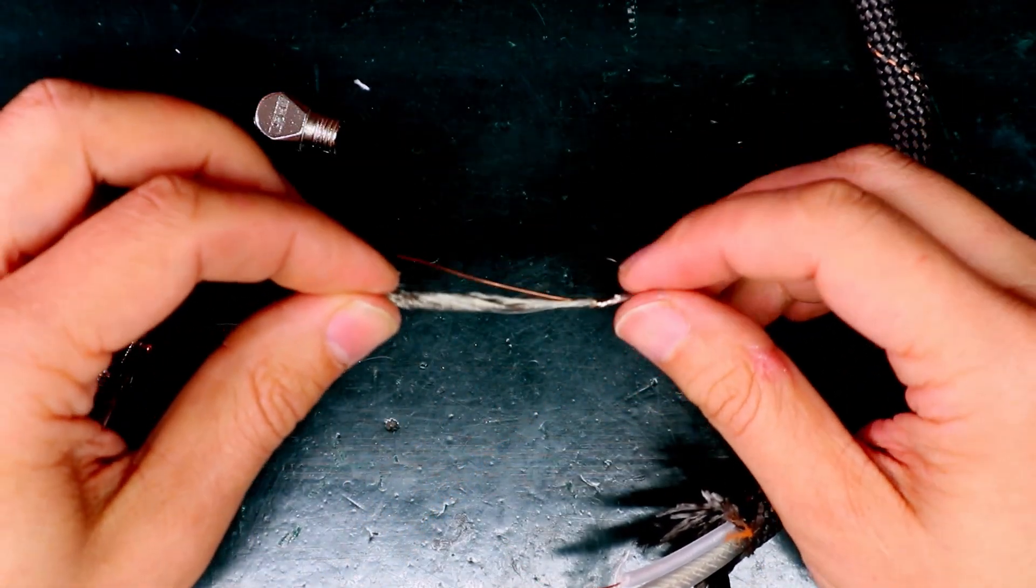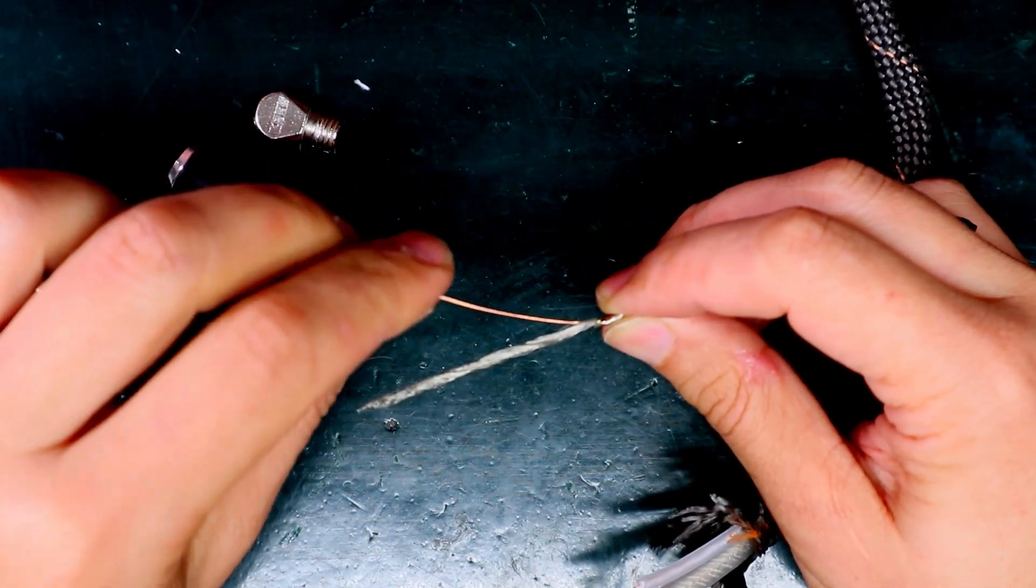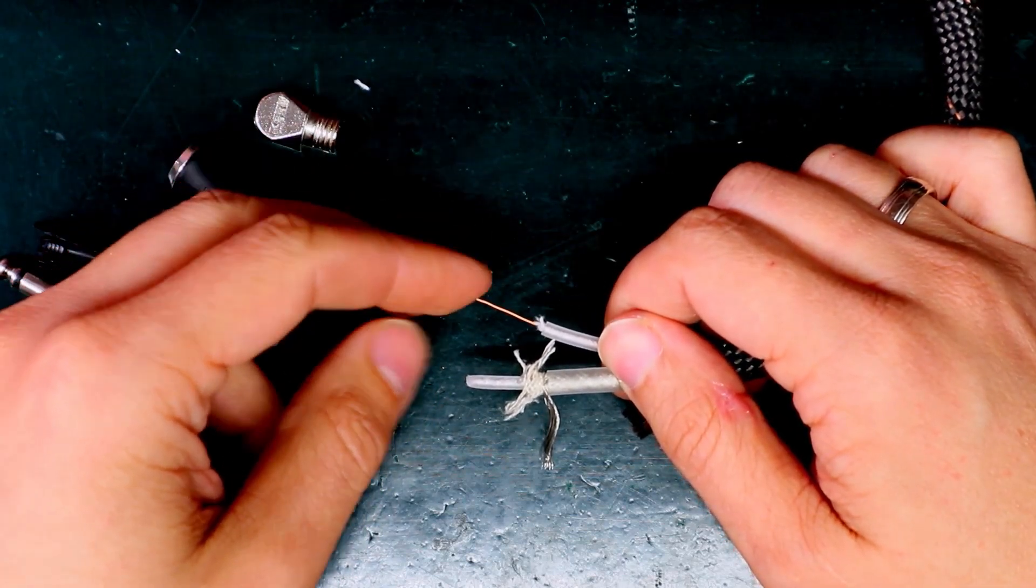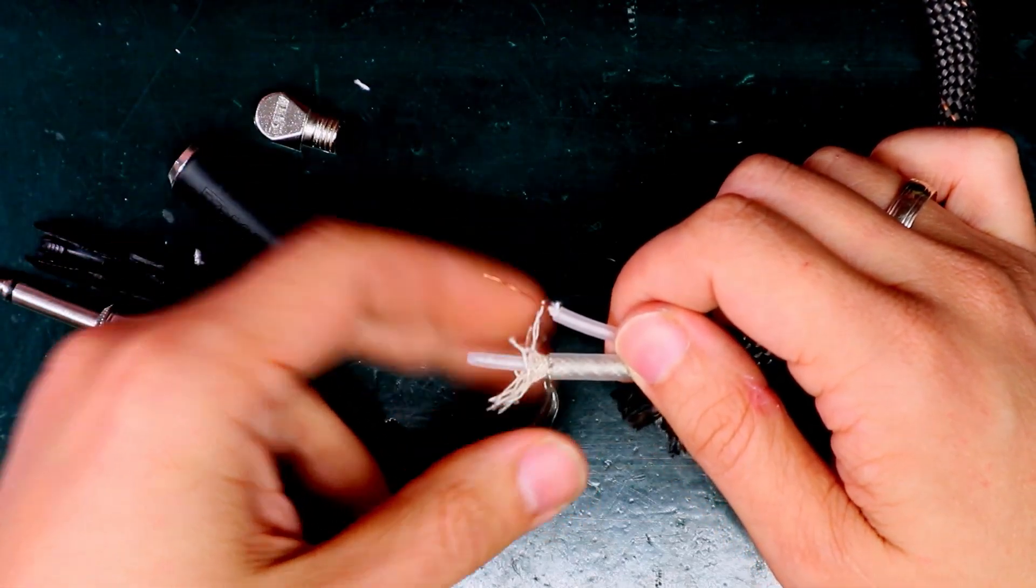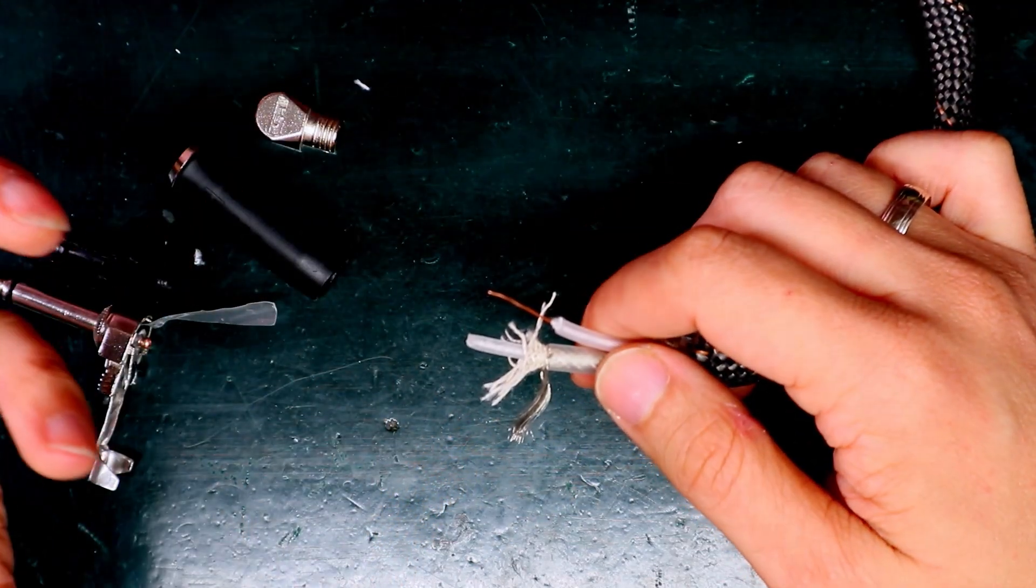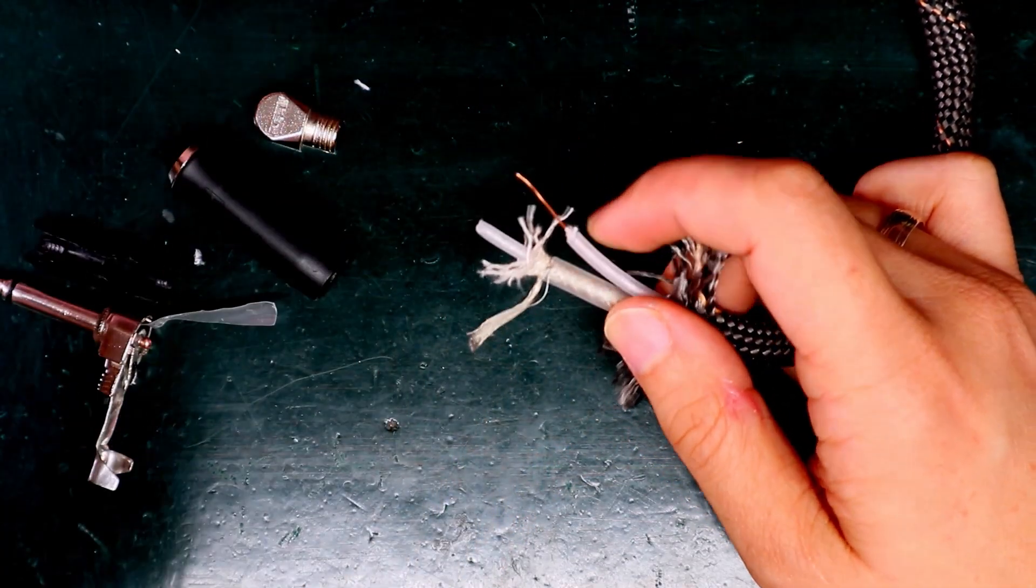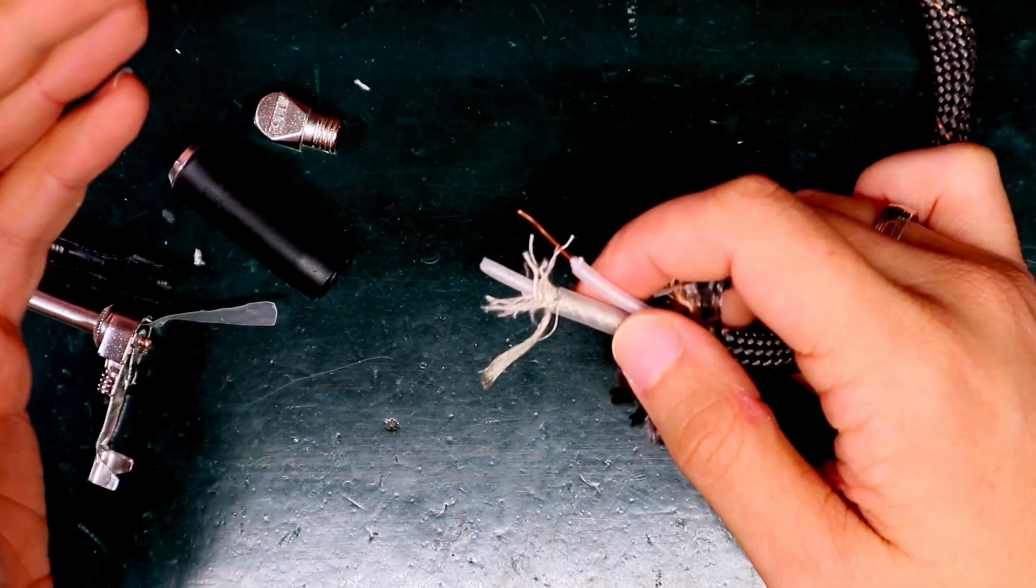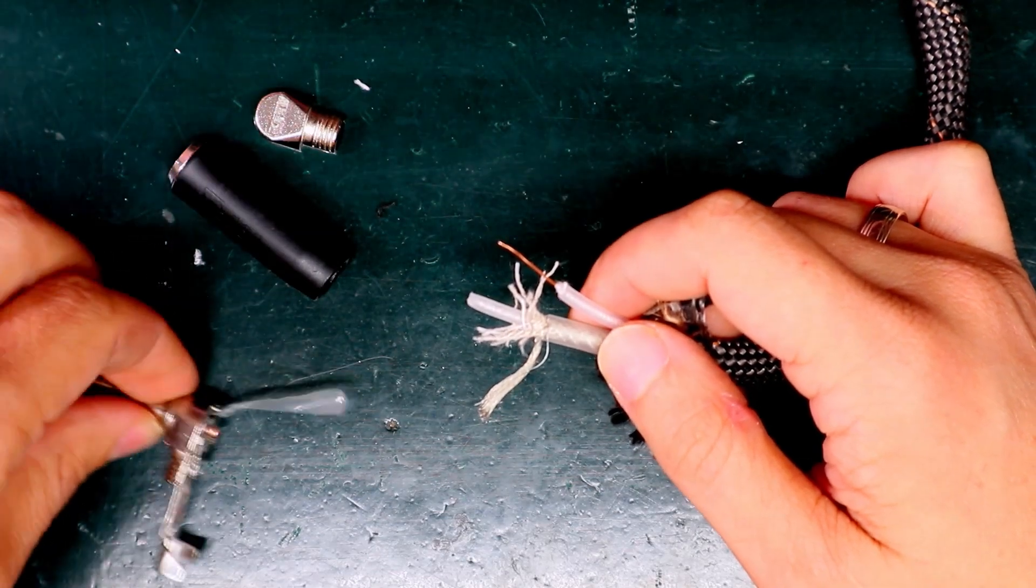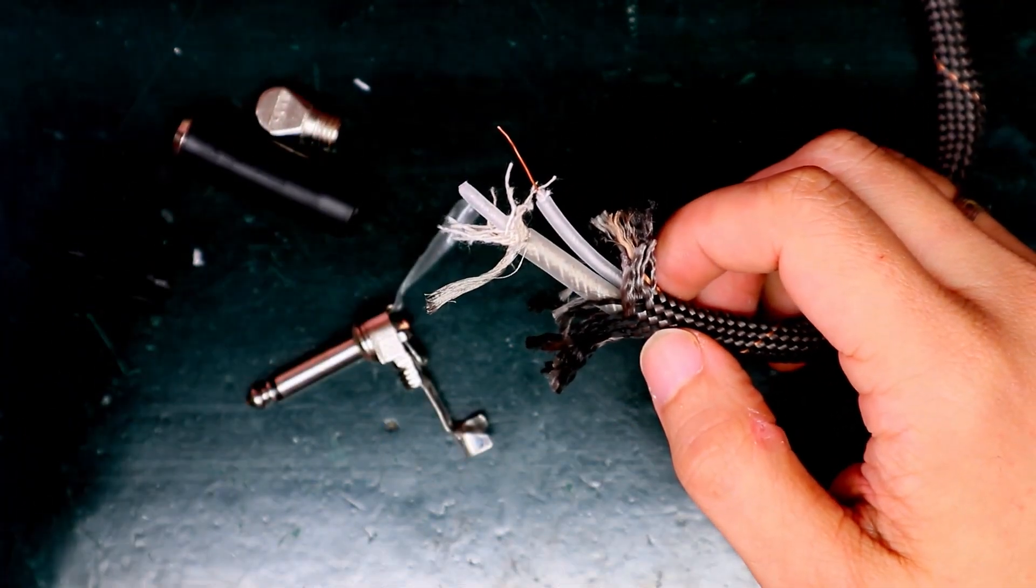This was inside of the jack and as you can see here is the shielding and this is the extra core. I am not sure what's the function of this extra core, for better shielding I am not sure. I think this mesh is more than enough but you know Vovox is a good brand so they know how to make cables. So now I have to clean up this and to solder everything and to check the cable.